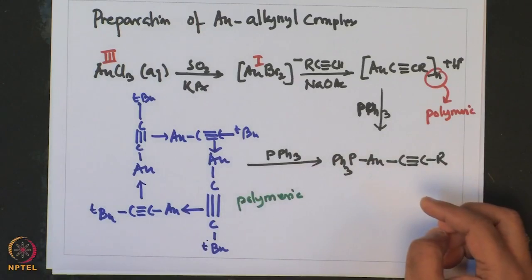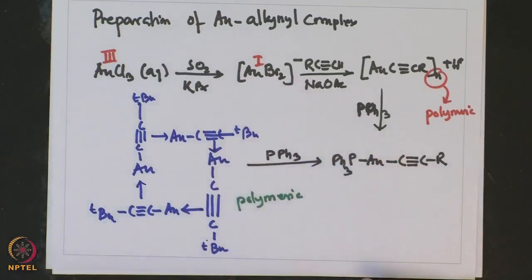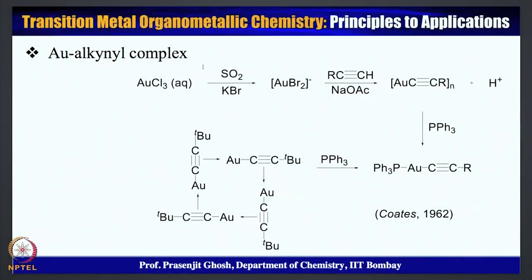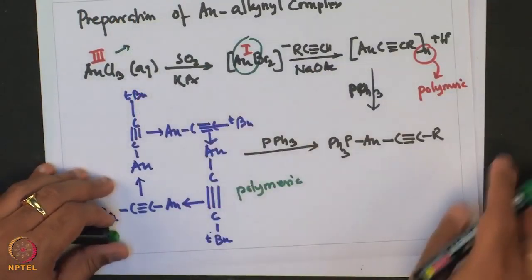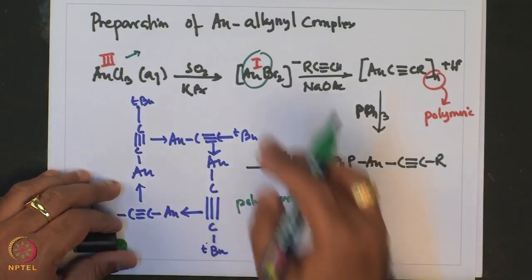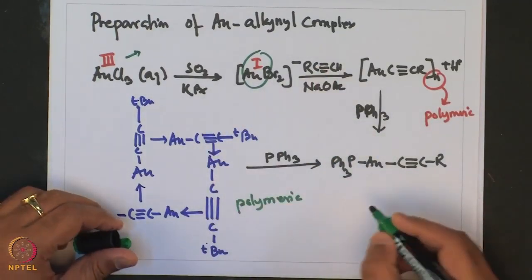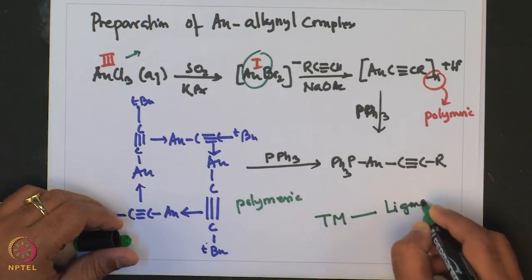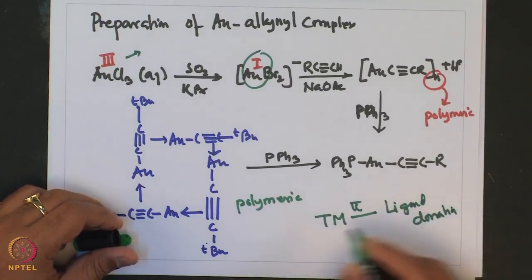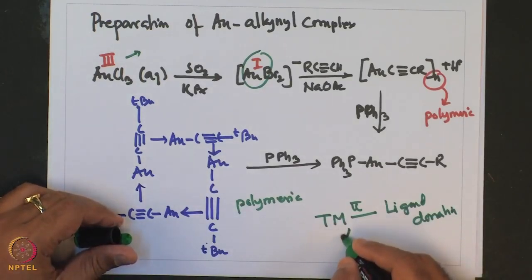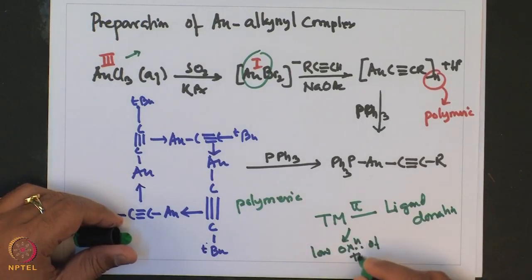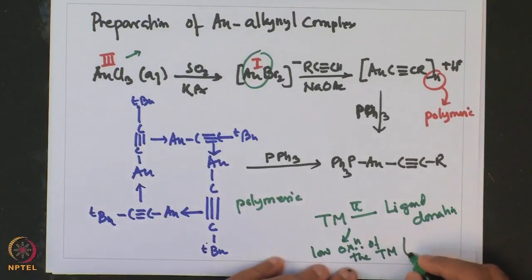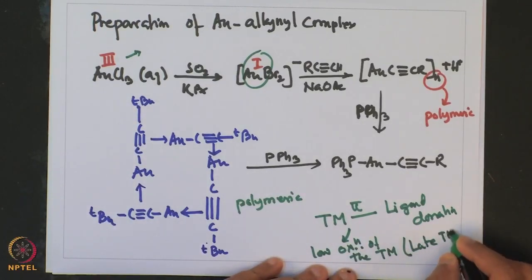The polymeric framework stabilizes the exceptional reactivity of the extremely basic acetylide moiety, which is very susceptible to hydrolysis. Another important aspect is that the metal must be in a low oxidation state, as in gold(I), rather than gold(III), for stabilizing the acetylide moiety. This stabilization arises from Transition Metal-to-ligand pi back-donation, which is facilitated by the low oxidation state of late transition metals that are electron-rich.